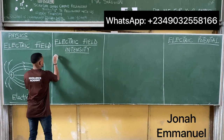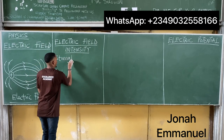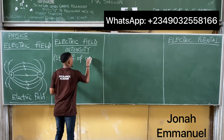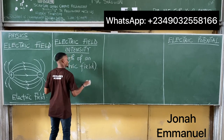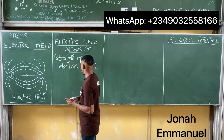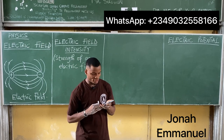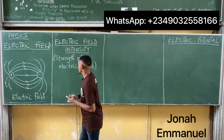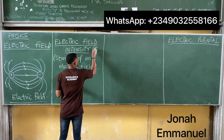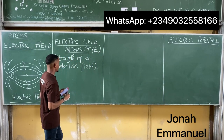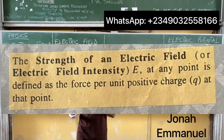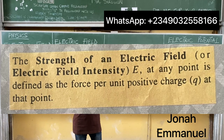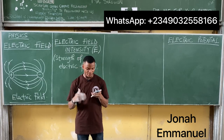Electric field intensity is also called the strength of an electric field. By definition, the strength of an electric field or electric field intensity is defined as the force per unit positive charge Q at that point. So it is simply force per unit charge.